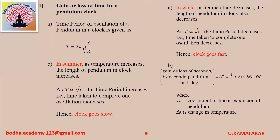Gain or loss of time by a pendulum clock: the time period of oscillation of a pendulum clock is given as T equals 2π into square root of (L/g). In summer, as temperature increases, the length of the pendulum increases. As T is directly proportional to root L, the time period increases, meaning time taken to complete one oscillation increases. Hence the clock goes slow.